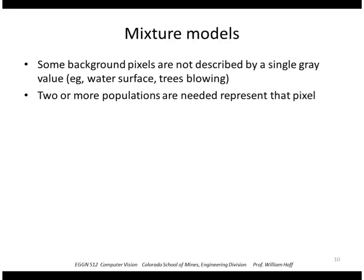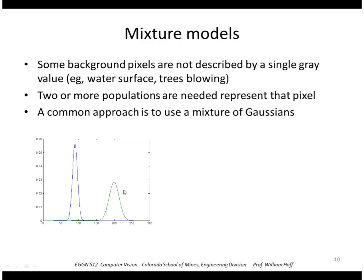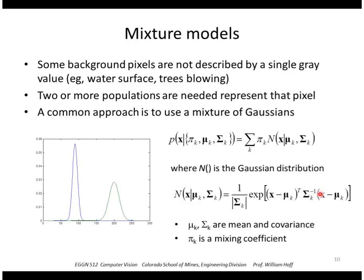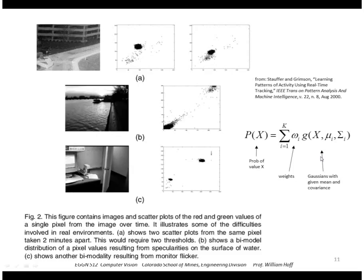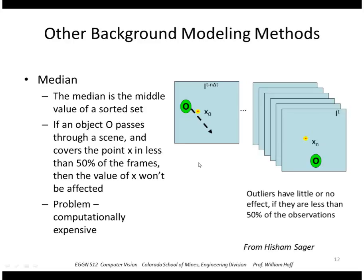An even more sophisticated way is to use multiple Gaussians — a mixture of Gaussians. For example, a particular pixel might be described by two separate distributions, so the total probability distribution is the sum of those Gaussians. The expression includes mu as the mean, sigma as the covariance, and pi as a weighting or mixing coefficient. In a color pixel example, a pixel from water shows two distinct populations in the red-green histogram, as does a pixel from a monitor.